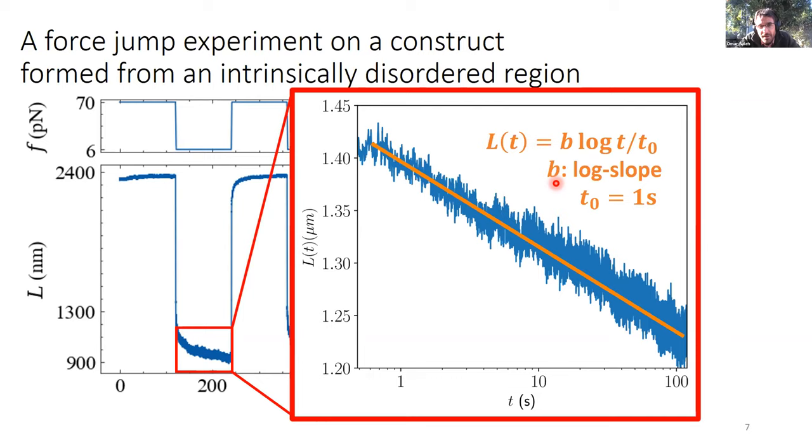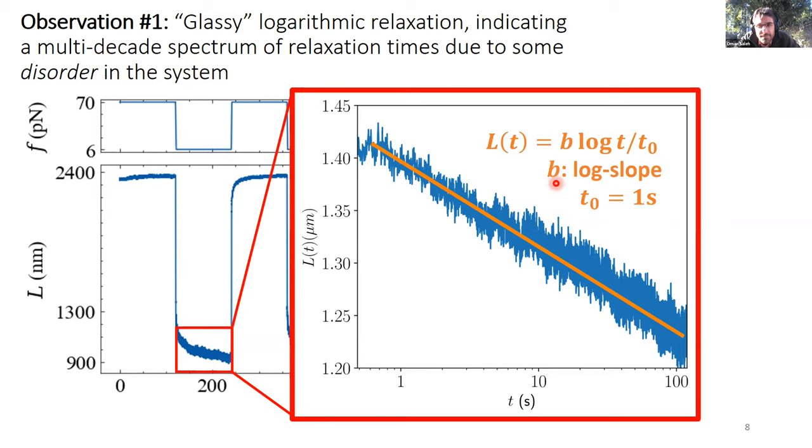So this is the first key observation of the strange behavior of this system. It's indicating a so-called glassy response. This is a glassy response where there's not just one relaxation time like in the helix coil system, but a spectrum of relaxation times. Why such a wide spectrum? Presumably because of some disorder in the chain, and this is thus a glassy response of the system. So what that disorder is, what even the chain is, I'll come back to in a minute.